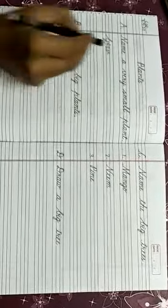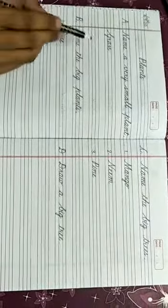So today we have learned about the topic plants, right? And in this topic we have studied about a very small plant, the big plants, and the big trees. So today's task for you is you have to write the question and answers, and you have to draw a big tree here, and you have to learn the spellings of the answers. Just like, name a very small plant, the answer is grass. So you must learn the spelling of grass.